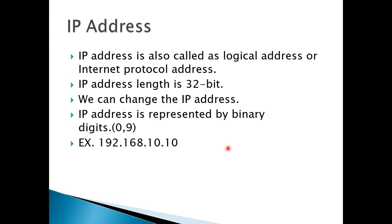There are two parts: one is dynamic and the other one is static. With a static IP address, we can change the default IP address of the system. IP address is always represented by binary digits 0 to 9, separated into four parts, each part separated by dotted notation.